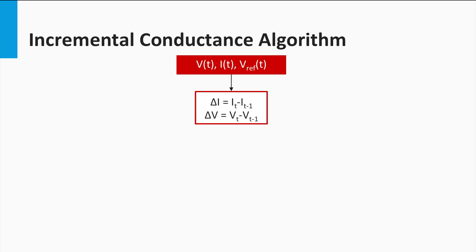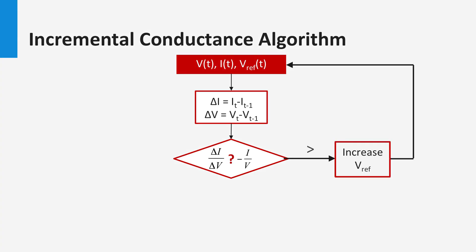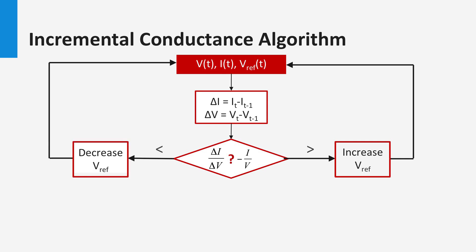For any change in the operating point, the algorithm compares the instantaneous and incremental conductance values. If the incremental conductance is more than the negative of the instantaneous conductance, this means the current operating point is to the left of the maximum power point. Consequently, the reference voltage is incremented.